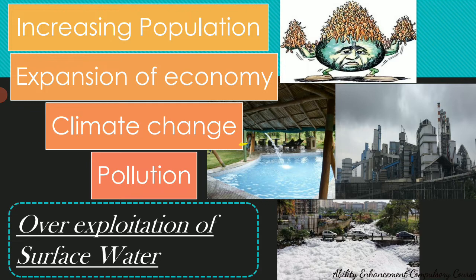Climate change has also affected the water cycle. Higher temperatures lead to more evaporation, which should lead to more precipitation, but some areas receive excessive precipitation causing floods while other areas receive less, causing droughts. Additionally, pollution is deteriorating water quality — mainly due to dumping of sewage. As seen in the picture of Vartur Lake in Bangalore, India, industries dumping waste into the lake have caused foaming, making the lake unusable for drinking.